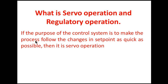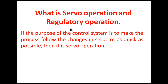What is servo mechanism and regulatory operation? In servo operation, the purpose of the control system is to make the process follow changes in set point as quickly as possible — the set point continuously changes while disturbance is generally constant. A solar tracker is an example: the set point continuously changes as the sun changes direction. Servo control is also called tracking control. In regulatory operation, the set point is constant and disturbances are rejected; this is also called stabilizing control.